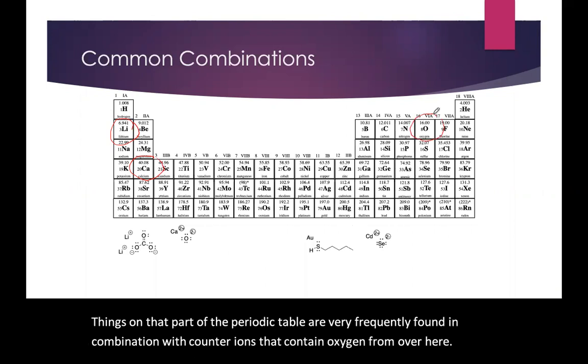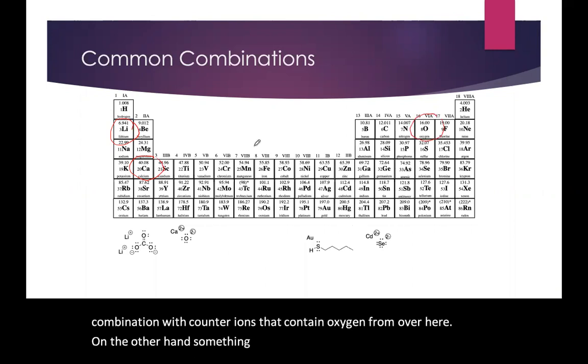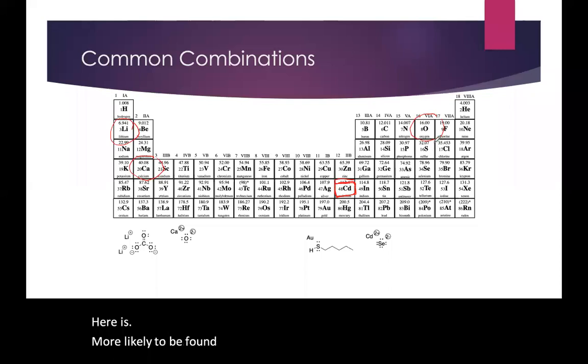On the other hand, something like cadmium here is more likely to be found with counter ions such as sulfur or selenium.